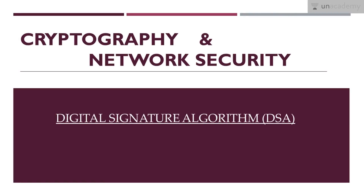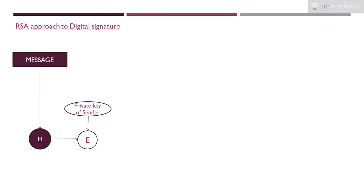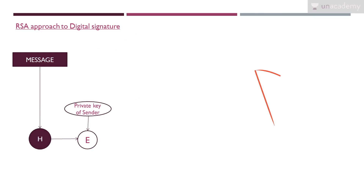We previously learned what a digital signature is, and in this lesson we cover the Digital Signature Algorithm. Before we learn the algorithm, we need to know the two approaches to digital signature: the RSA approach and the DSS approach. RSA can be used for key exchange, encryption/decryption, and for digital signature.